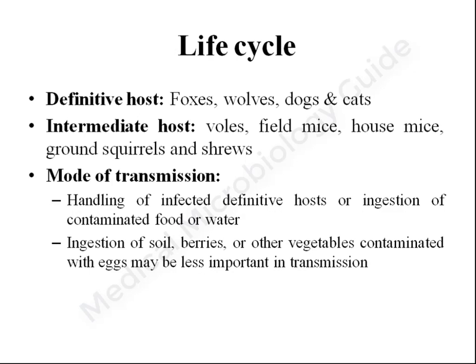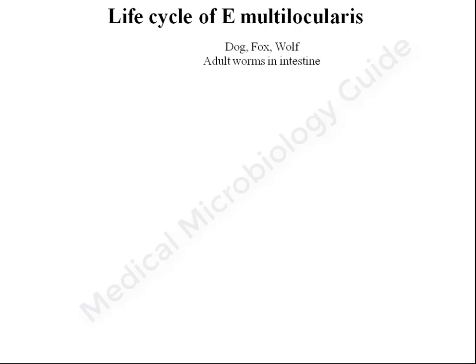The life cycle of Echinococcus multilocularis is complex, involving two hosts. The definitive hosts are foxes, wolves, dogs, and cats. The intermediate hosts are voles, field mice, house mice, ground squirrels, and shrews. The adult worm resides in the small intestine of dogs, foxes, or wolves.